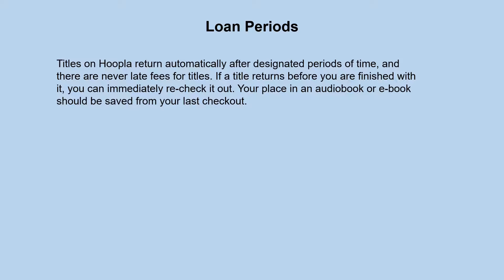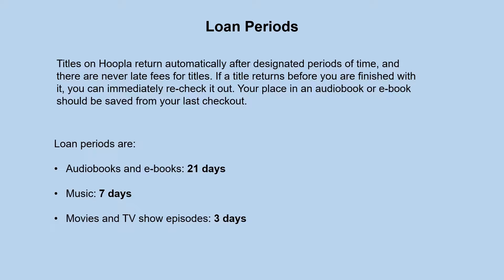Titles on Hoopla return automatically after designated periods of time, and there aren't any late fees ever. If a title returns before you are finished with it, you can immediately recheck it out as long as you have remaining borrows for that month. Also, if you check out a title again after it has been returned, for audiobooks and ebooks you can resume from where you last left off. The loan periods are: audiobooks and ebooks 21 days, music 7 days, and movies and TV show episodes 3 days.